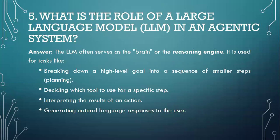Moving to question number five: What is the role of large language models (LLM) in an agentic AI system? The LLM often serves as the brain or the reasoning engine. It is used for tasks like breaking down a high-level goal into a sequence of smaller steps (planning), deciding which tool to use for specific steps, interpreting the results of an action, and generating natural language responses to the user.